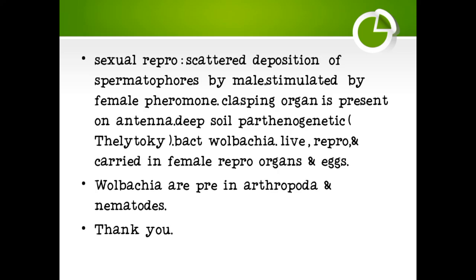Sexual reproduction is present. Males scatter spermatophores, stimulated by female pheromones. A clasping organ is present on the antenna. In deep soil, parthenogenetic or thelytokous reproduction occurs. The bacterium Wolbachia is present, living and reproducing in female reproductive organs and eggs. Wolbachia is found in Arthropoda and Nematoda.